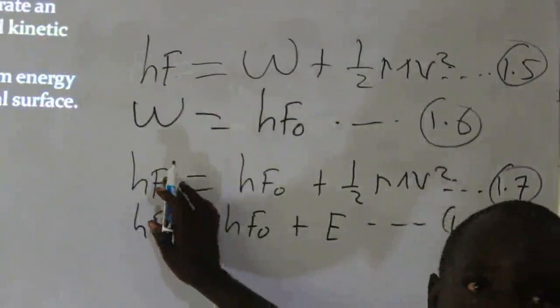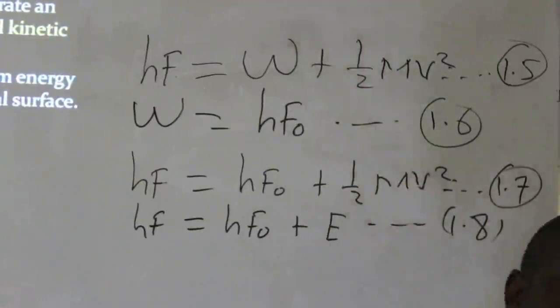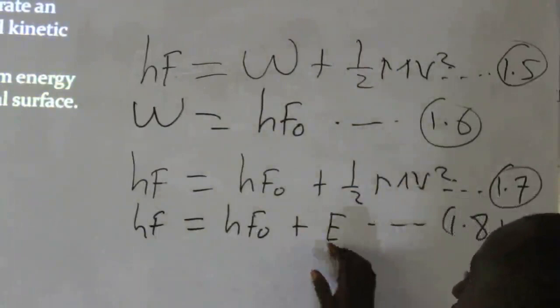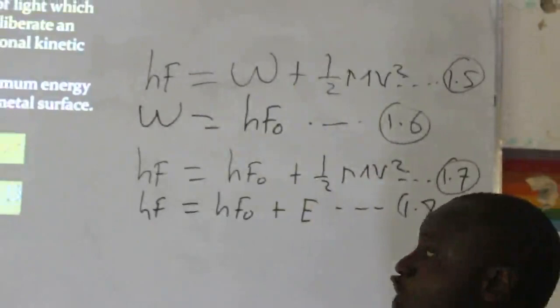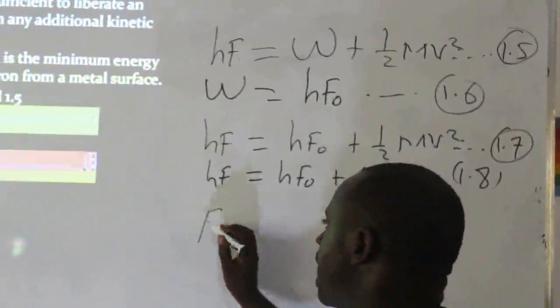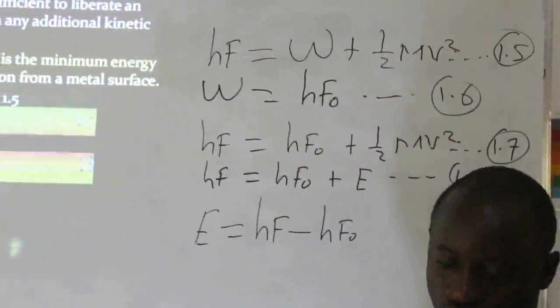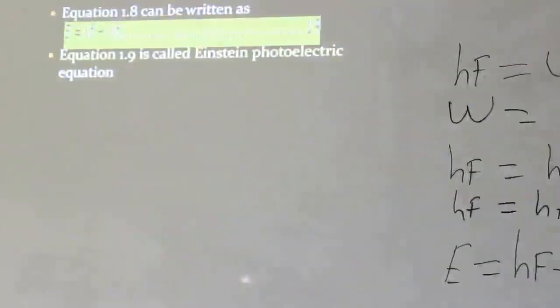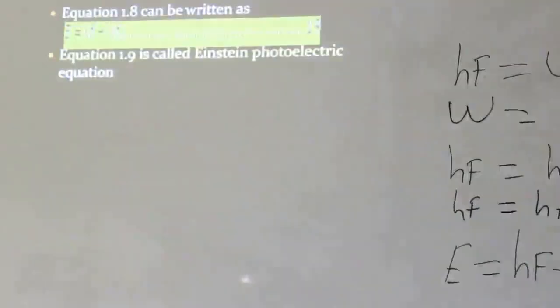HF is the total energy content of the photon, HF naught is the work function, and E is the kinetic energy that the electrons gain, making it possible for the electrons to begin to move. We can make the kinetic energy E the subject of the formula: E = HF minus HF naught. We call this the Einstein photoelectric equation.